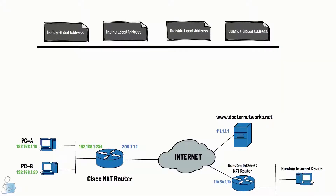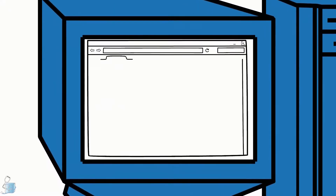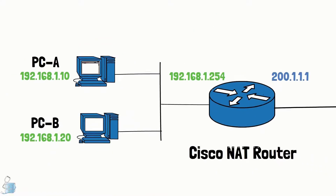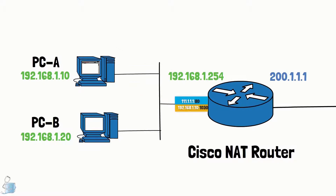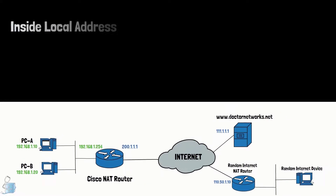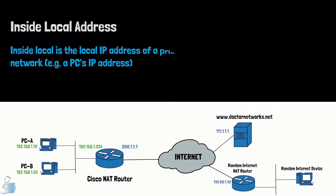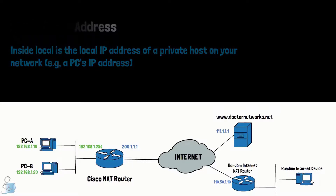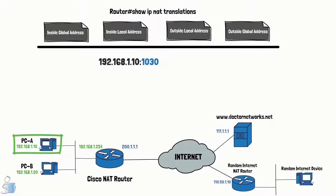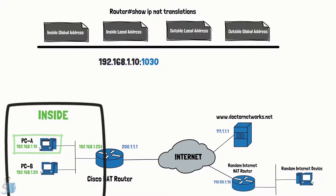Let's say PCA has a web browser open and is connecting to the website drnetworks.net via HTTP. The inside local address is the local IP address of a private host on your network — in this case PCA. PCA resides inside your organization physically speaking, which justifies the inside part. Local is the perspective, so from the perspective of the internal or local devices, they see that address as 192.168.10.x.